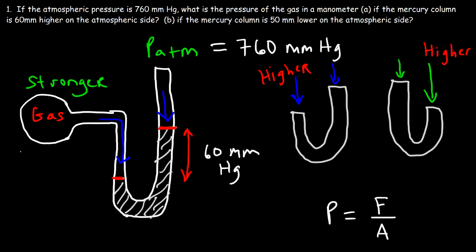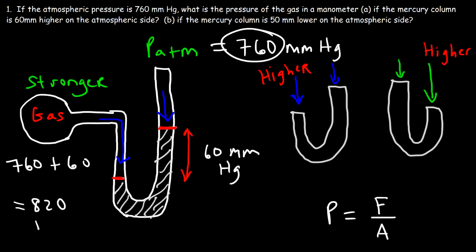To calculate the gas pressure, it needs to be greater than 760, so we add 60 to 760. The gas pressure is 820 millimeters of mercury.